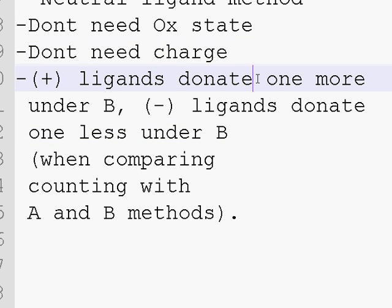So with method B it's a little bit different from method A, the way you tally up electrons. And specifically with charges, the ligands just count differently in method B. So if you have a positive charge on a ligand, usually it will count as one more under B. And if you have a negative charge on a ligand in B, it will count as one less than under A.